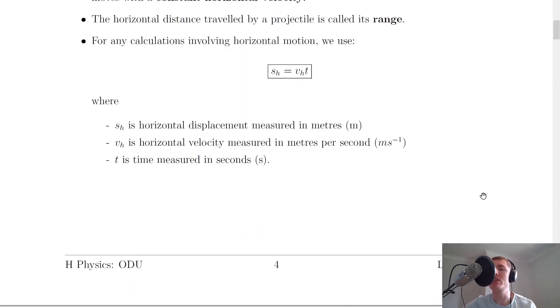We then have a specific equation we can use for horizontal motion. For any calculations involving horizontal motion, we use sh = vh × t. Remember this is just your equation relating displacement, velocity, and time. Where sh is the horizontal displacement measured in metres, vh is the horizontal velocity measured in metres per second, and t is time measured in seconds. You probably just remember the equation as s = v × t from the relationship sheet, but we've given it little subscripts h here to represent the horizontal motion. So if we're dealing with horizontal motion at any time, we can use this equation.